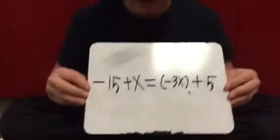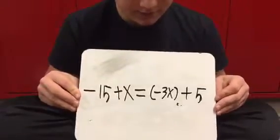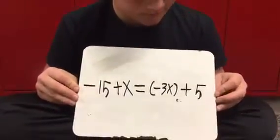So our first problem is negative 15 plus x equals opposite 3x plus 5.